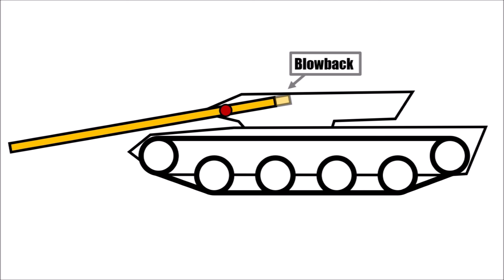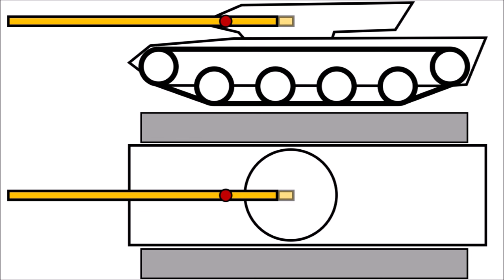So with the gun dimensions defined, we can move to the next crucial dimension, the turret's diameter. So we have the gun, we have the mounting point, we have the internal length and the blowback.